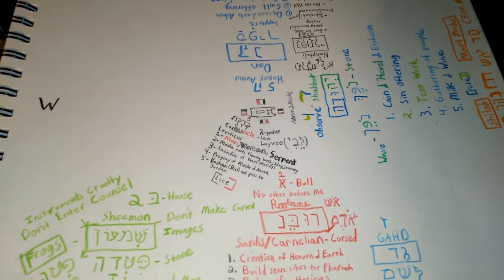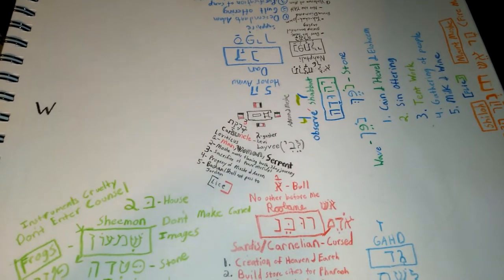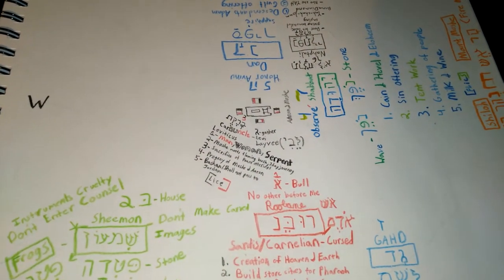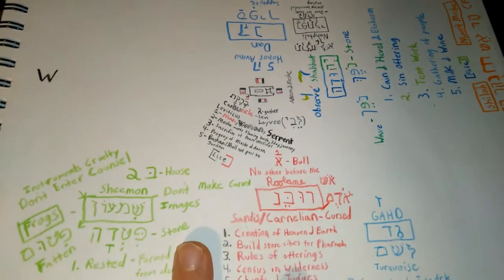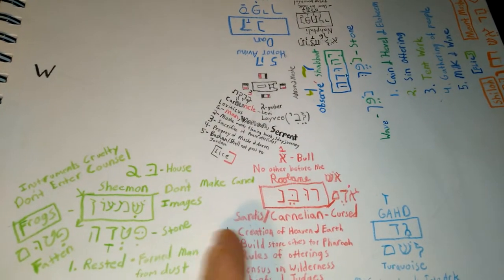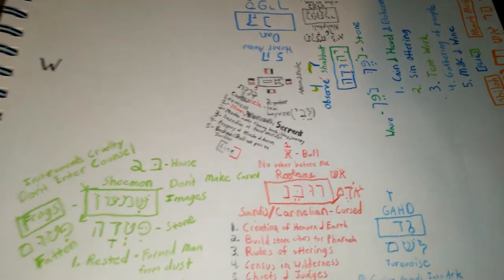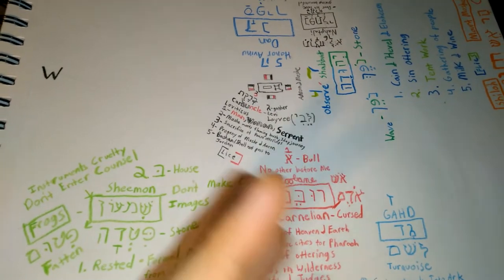So today we're going to do an updated version on the Camp 2 video. I've got a lot of information to add and there was two camps. One Mount Moshe, the other one was in Shiloh.